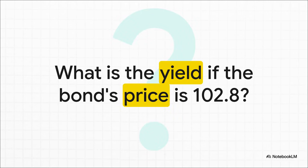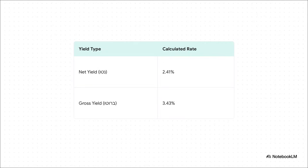Now let's flip this on its head. This time we know the price — someone is selling this bond for 102.8 — so our job is to figure out the yield: what's the actual rate of return if you bought it at that price? Working backwards from 102.8, we find the net yield — your actual take-home return — is 2.41%. You might see the gross yield quoted at 3.43%, but that's before tax. This is a perfect reminder to always focus on the net yield. That's the return that really matters to your wallet.